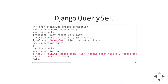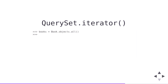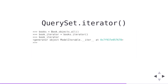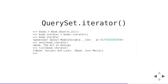Django querysets won't do any work until you start to loop over them, and they cache their results so you don't need to do the same query more than once. If you're looping over a million rows, you may not want all those rows cached in memory at once. You can use the iterator method on querysets. The iterator method gives us back an iterator object. Just like every other iterator, we can call next on it to loop over it once, or loop over it with a for loop or any other looping construct.